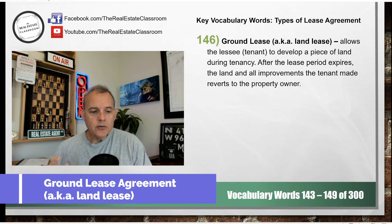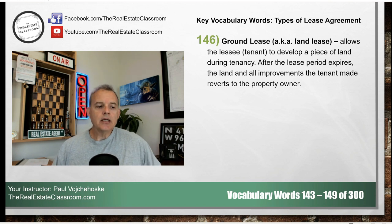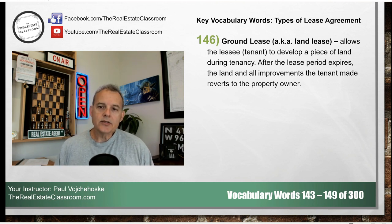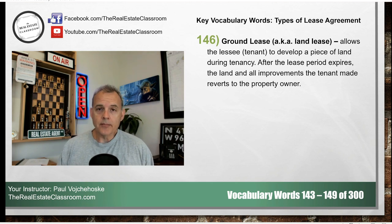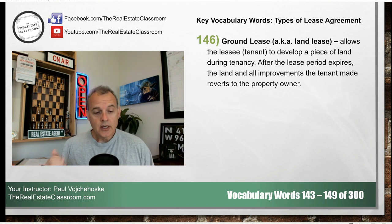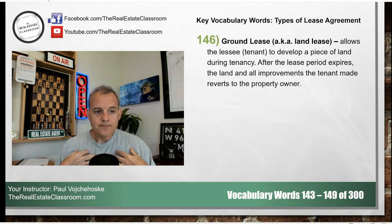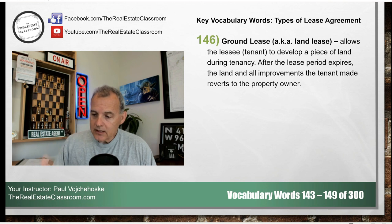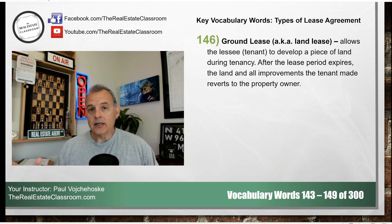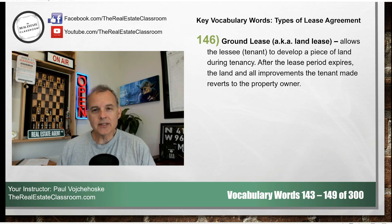Number 146 is a ground lease, sometimes referred to as a land lease. It allows the lessee to develop a piece of property or land during the period of tenancy. After the lease expires, the land and any improvements the tenant built on it reverts to the property owner. These ground leases are typically very long-term — 10, 15, 20 years. For example, if I'm the tenant and I lease a piece of property for 15 years and build a department store, I'm paying for it, but when the tenancy ends and the lease expires, the land plus the building I paid for becomes the property of the land owner.